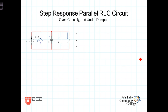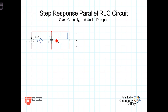Here's our RLC circuit parallel connected. For T less than zero, the switch is in a position basically shorting the current source out. At T equals zero, the switch opens and instantaneously applies this DC current source to the parallel RLC combination. Our purpose is to determine the step response — the way the voltage across these three elements, or equivalently the current through any one of them, reacts to this switching in of the current source.